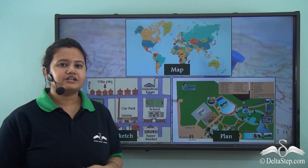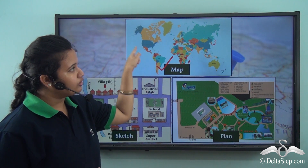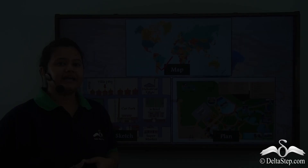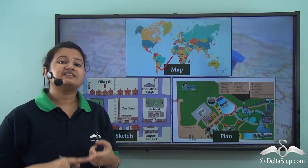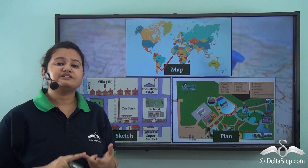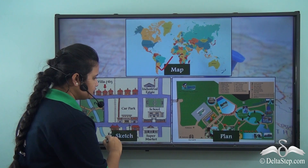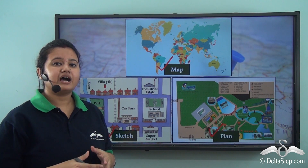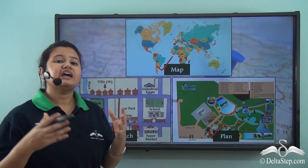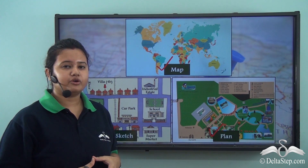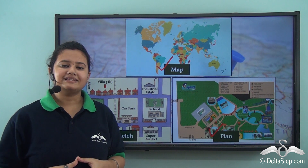In today's lesson, we first understood the meaning of maps — a diagrammatic representation of a part of the earth's surface or whole of it on a flat surface. We discussed various types of maps: physical maps, which define the physical and natural features of a place; political maps, which define the political divisions of a place; and thematic maps, which focus on specific information. We also discussed sketch and plan — sketch maps are very rough drawings of an area, while plans provide detailed information about a small area on a very large scale.